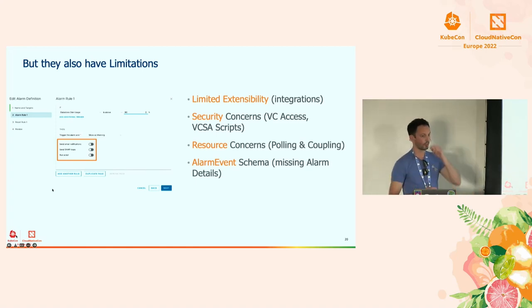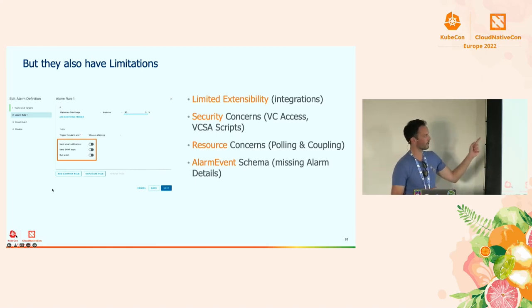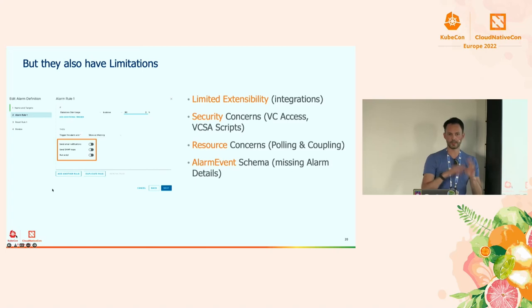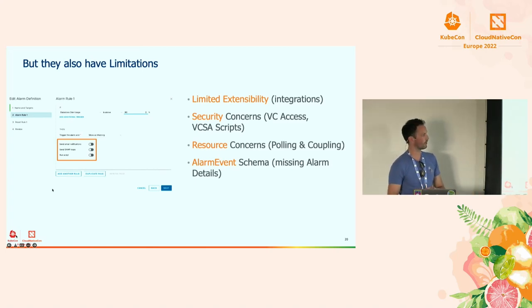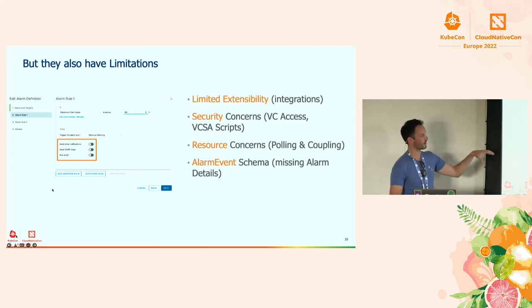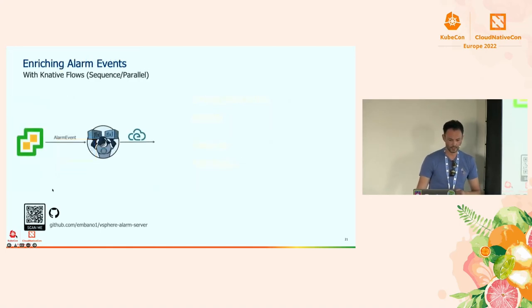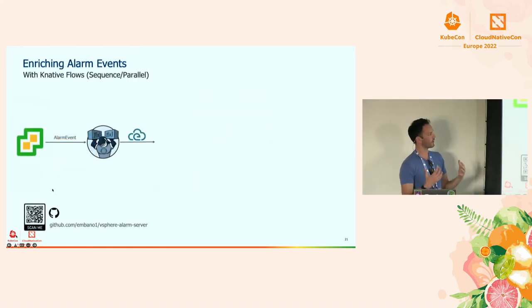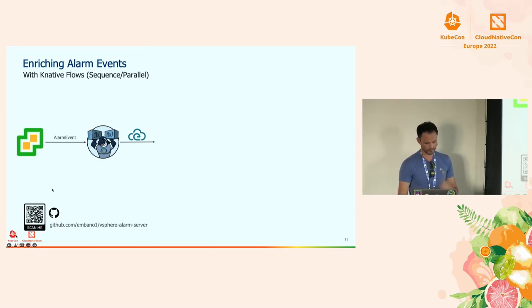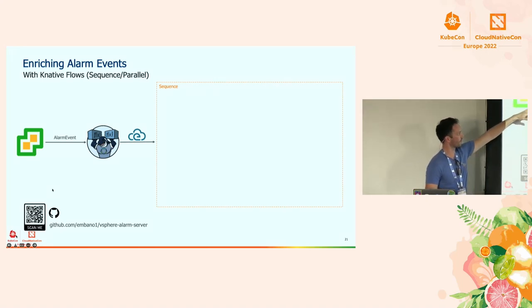You might be smart and think: I'll build my own custom integration. Let me build my Python, my PowerCLI, whatever. This works, but the problem with the alarm event you get is that it's very generic and misses a lot of data. So what we've done with some of the VEBA examples is use some Knative concepts to do a bit more magic on the events.